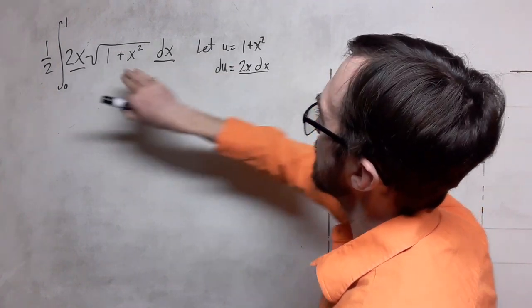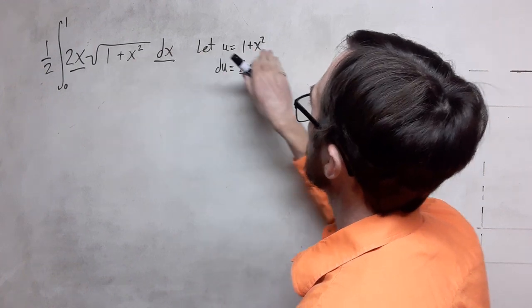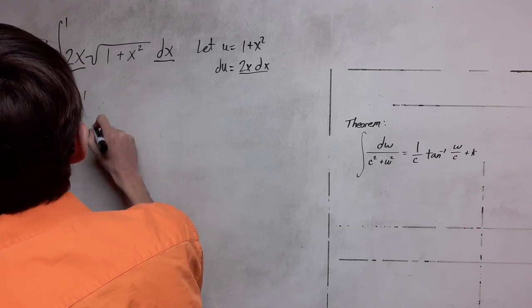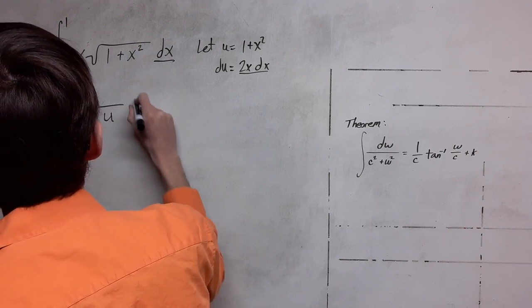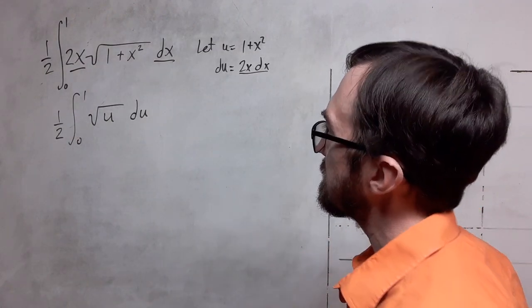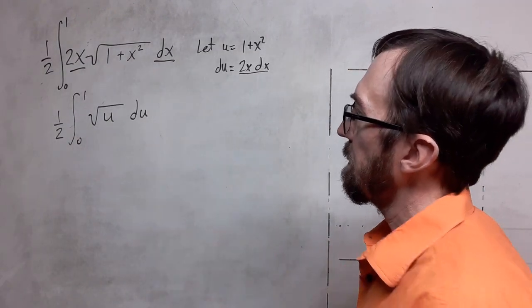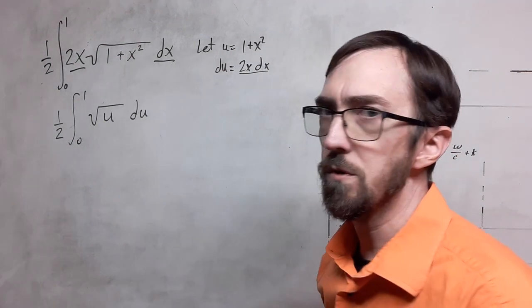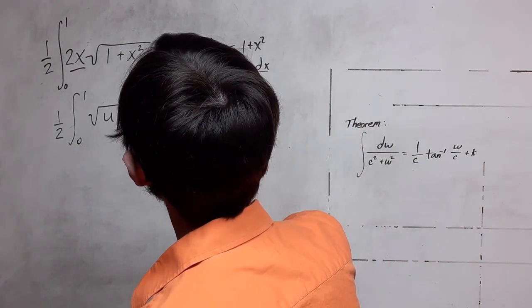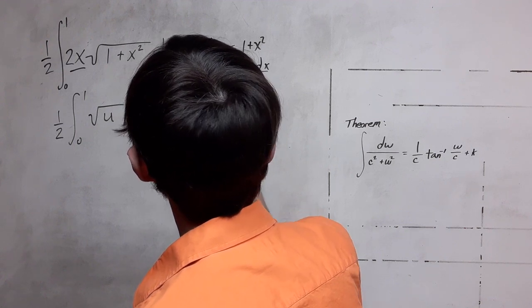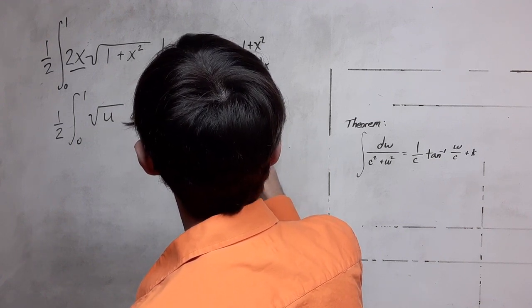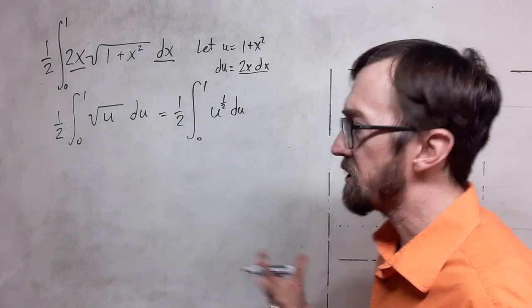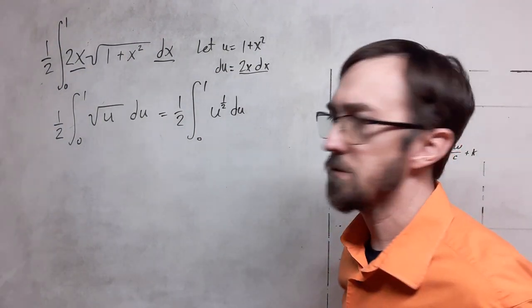This gives us the dx and the 2x that we can replace with du. The expression under the radical will become u. So we can rewrite this — and this still may not be the best form for everybody. We're going to rewrite it so that it's in exponent form. Now that we have it in exponent form, it may help us as we try to visualize and think through what the antiderivative is going to be.